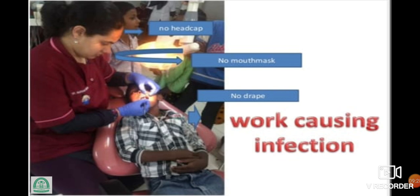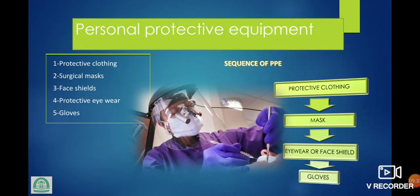No head cap, no mouth mask, no drape — it will cause infection. Personal protective equipment: the 5 PPE items are protective clothing, surgical mask, face shield, protective eyewear, and gloves. Sequence of PPE: first wear protective clothing, then mask, then eyewear or face shield, and then gloves.